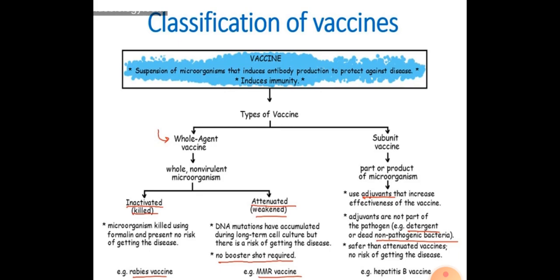Attenuated means yeh vaccines live hoti hain par weak hoti hain — but they do not cause disease, but there is some risk. DNA mutations have accumulated during long-term cell culture, but there is a risk of getting disease. Attenuated kyunki yeh weak hoti hain, yeh puri tarike se killed nahi hain, to yeh disease cause kar sakti hain. There are chances, kyunki yeh live organism contain karti hain. For example, MMR vaccine.